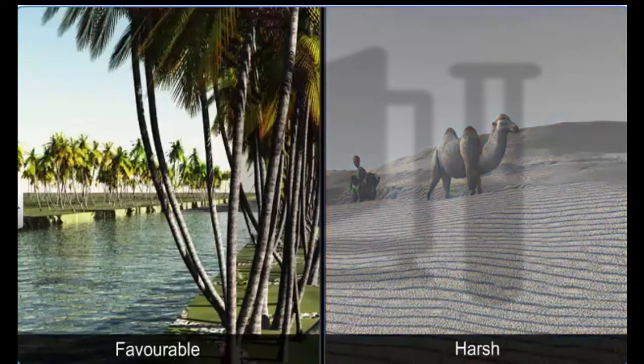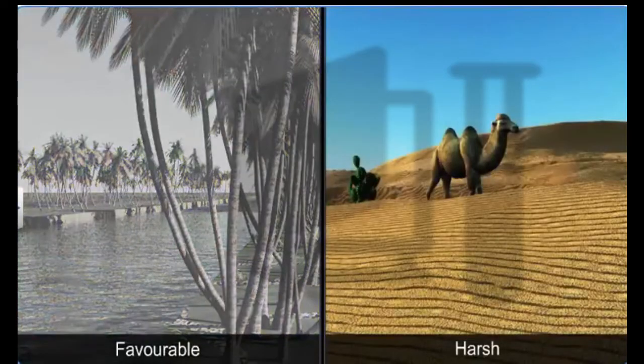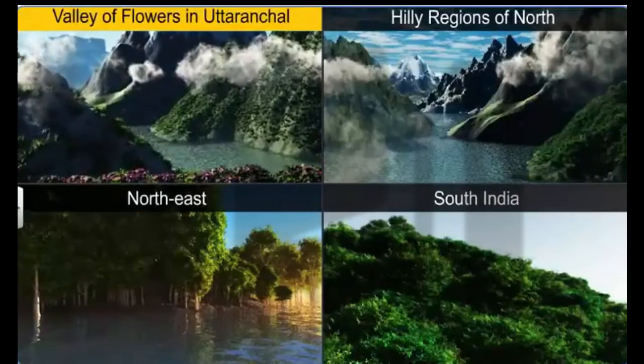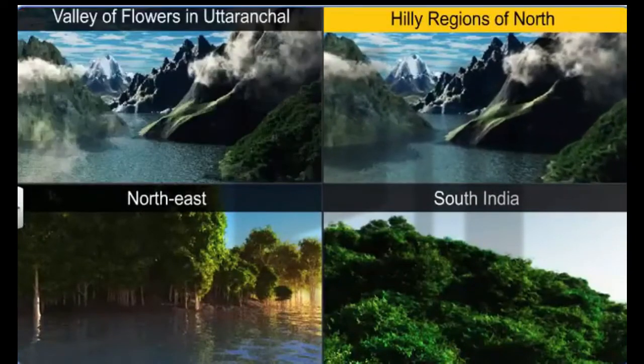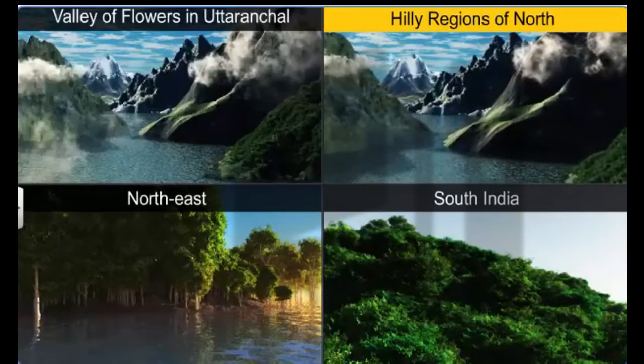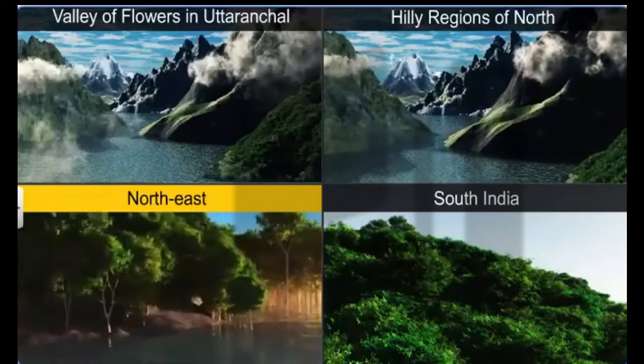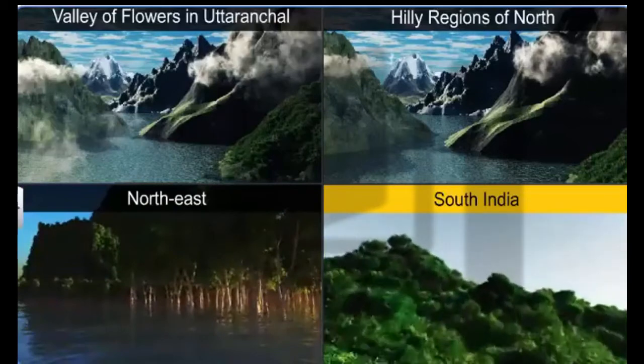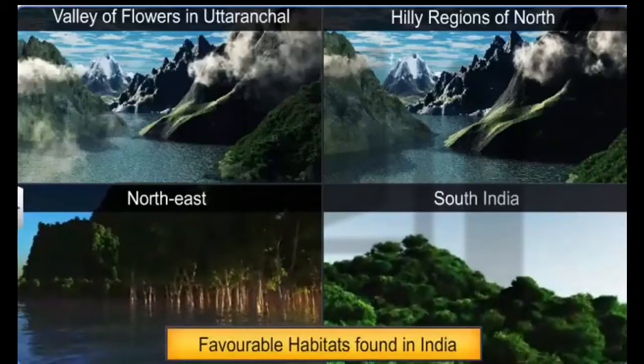Some of these habitats are favourable, while others are harsh. The valley of flowers in Uttaranchal and the hilly regions of North, Northeast, and South India are some favourable habitats found in India.